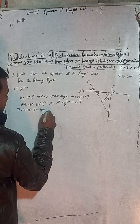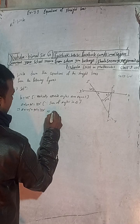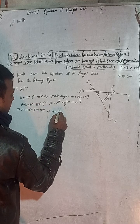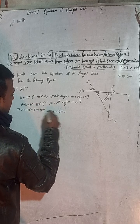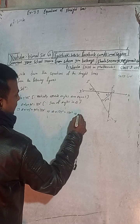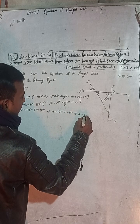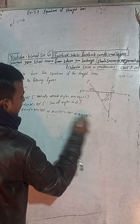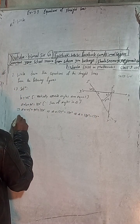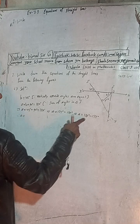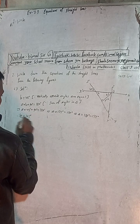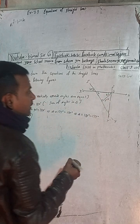This implies A plus 90 plus 45 is 135 degrees, equal to 180 degrees. Therefore A is equal to 180 degrees minus 135 degrees, so A is equal to 45 degrees.